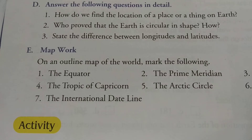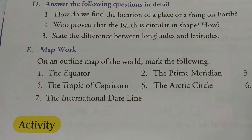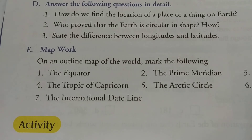Now come back to the longitude column and make the third bullet. Write: 'They are of the same length.' Full stop. Now go to the latitude column, make the third bullet and write: 'They get shorter and shorter as they move towards the poles.' Full stop.